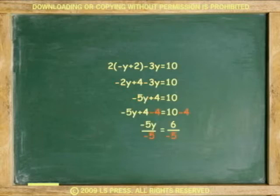Subtract 4 from both sides and divide both sides by negative 5. y equals 6 over negative 5, or negative 1.2.